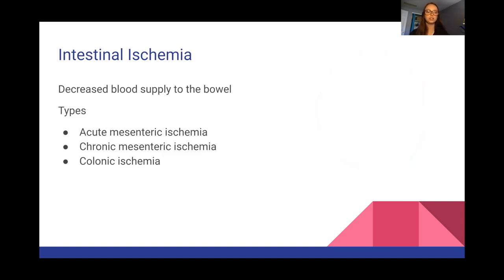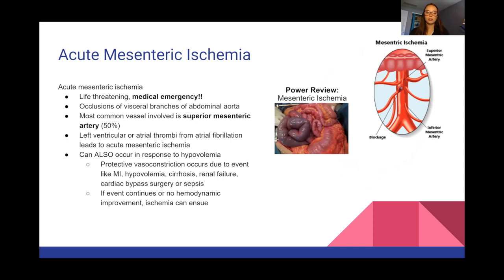Intestinal ischemia is decreased blood supply to the bowel. There are three types: acute mesenteric ischemia, chronic mesenteric ischemia, and colonic ischemia. Acute mesenteric ischemia is the very bad one — a medical emergency, life-threatening, due to occlusions of visceral branches of the abdominal aorta. The most commonly involved vessel is the superior mesenteric artery, about 50% of the time. It's caused by left ventricular or atrial thrombi from AFib, or in response to events causing hypovolemia — such as MI, cirrhosis, renal failure, bypass surgery, or sepsis — and if there's no hemodynamic improvement, ischemia results.